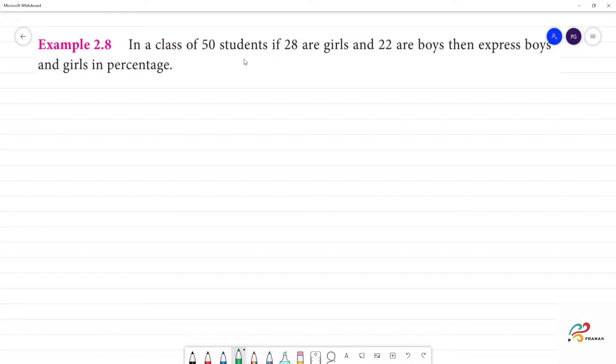In a class of 50 students, if 28 are girls and 22 are boys, express boys and girls in percentage.